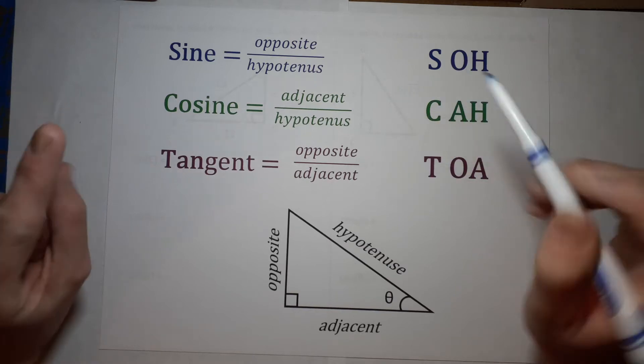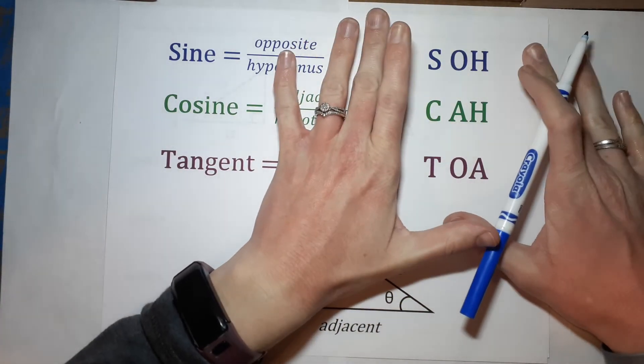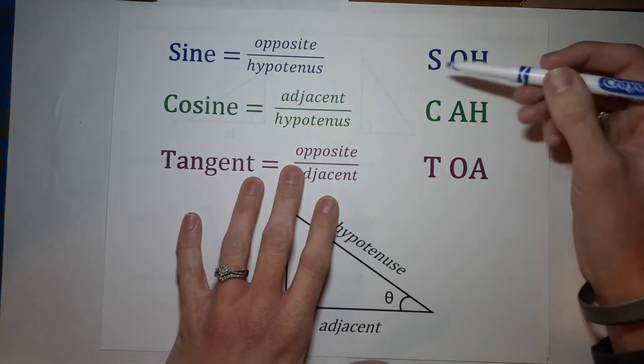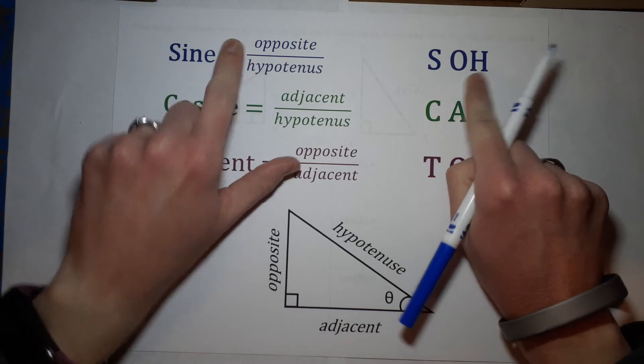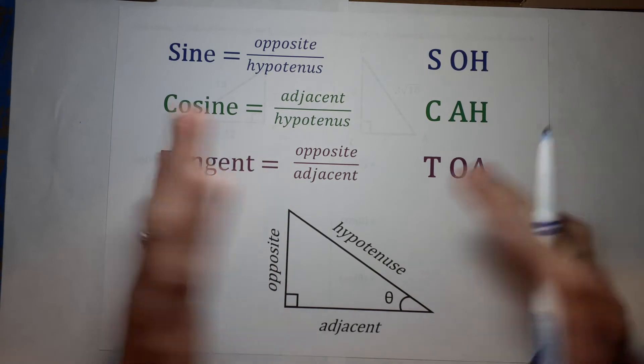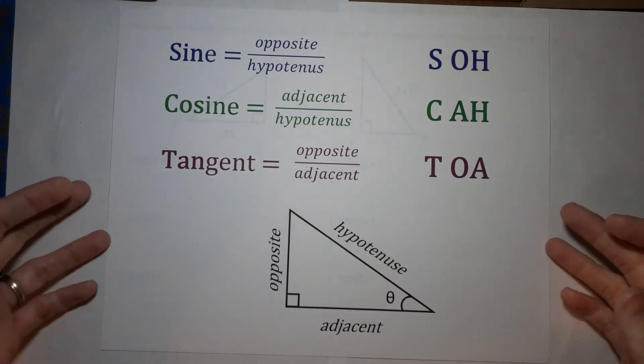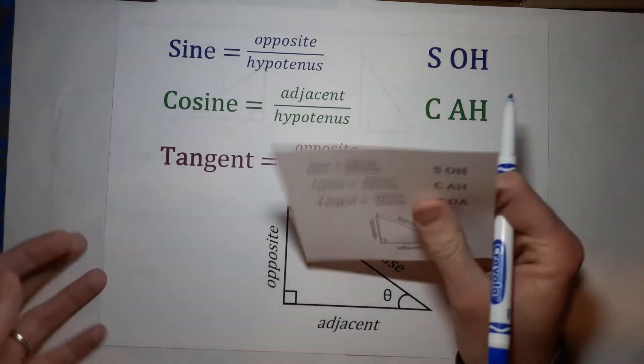So sine is opposite over hypotenuse, cosine is adjacent over hypotenuse, tangent is opposite over adjacent. You're probably like 'what is she talking about?' Let's do a problem. This over here is just an easy way to remember this: SOH CAH TOA.